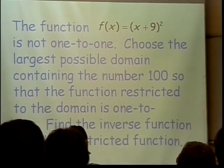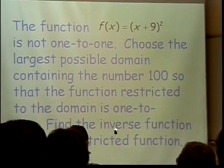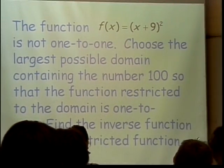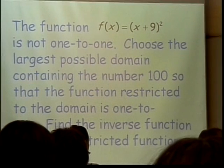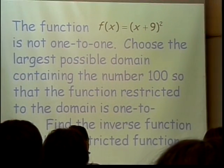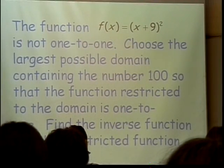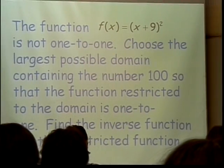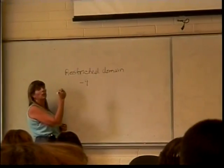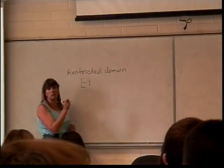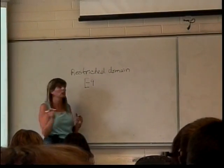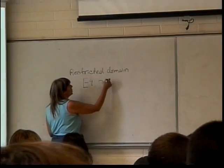So when I'm lopping off the thing and I want to get the restricted domain, the new restricted domain will go from, where does it start? Where is that vertex point? Negative 9. Do I get to include negative 9? Yes, I probably should because it's an okay point. It doesn't cause any problems with the one-to-oneness. And I go off to infinity.